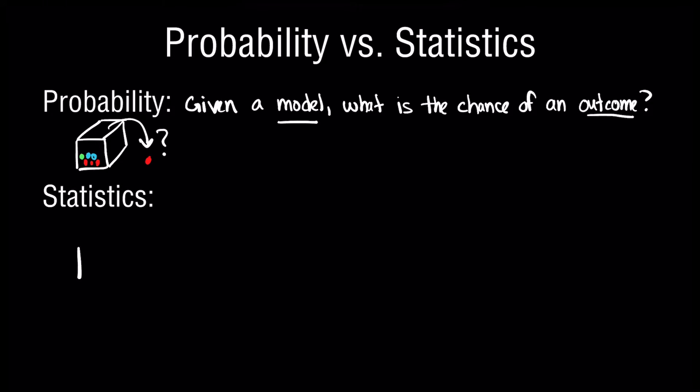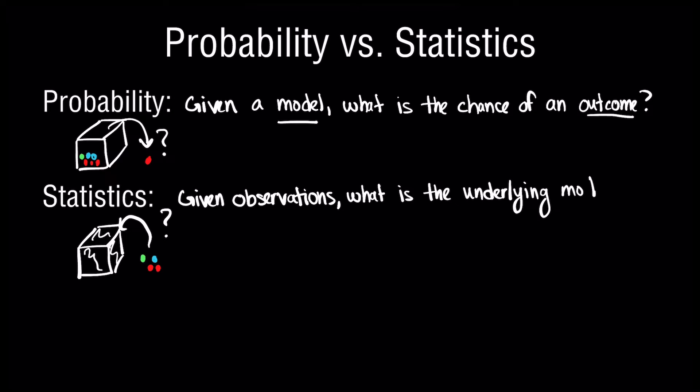Conversely, the context of statistics is one where we don't know the true underlying model for a system or application, but what we do have access to are some set of observations, some data points, some past outcomes. And with that, we're usually trying to figure out the underlying model that those observations were generated from.